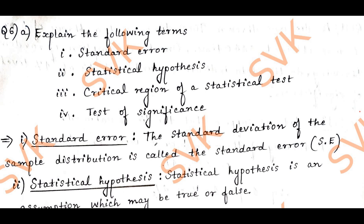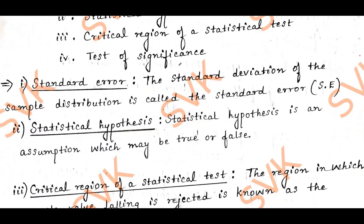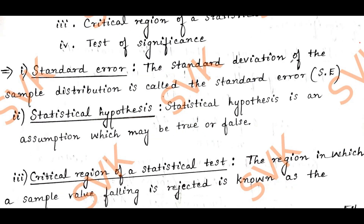The standard deviation of the sample distribution is called standard error. Statistical hypothesis is an assumption which may be true or false.